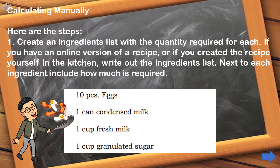We are calculating manually. Here are the steps. Step 1: Create an ingredients list with the quantity required for each. If you have an online version of a recipe, or if you created the recipe yourself in the kitchen, write out the ingredients list. Next to each ingredient, include how much is required. See the sample below.